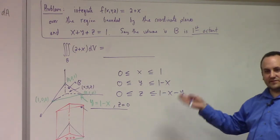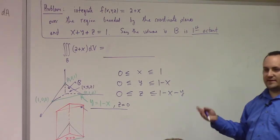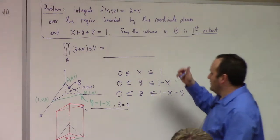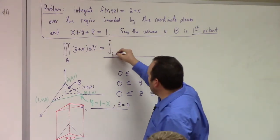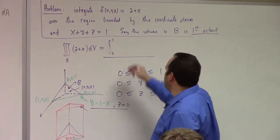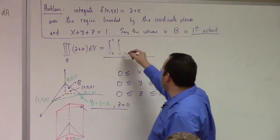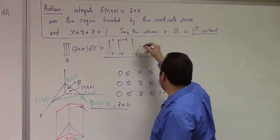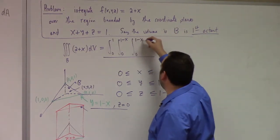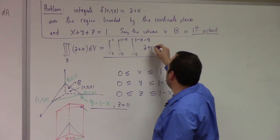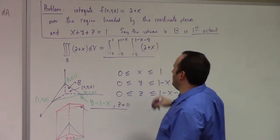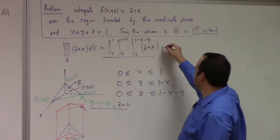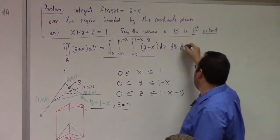So long story short, this is the integral from 0 to 1, integral from 0 to 1 − x, integral from 0 to 1 − x − y, of (2 + x), dz dy dx. You integrate from the most interesting to least — the bound with x and y dependence goes innermost because the answer has to be a number.